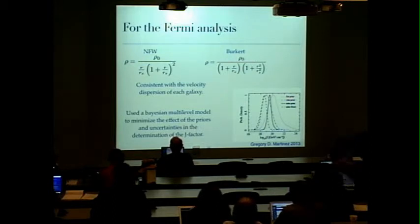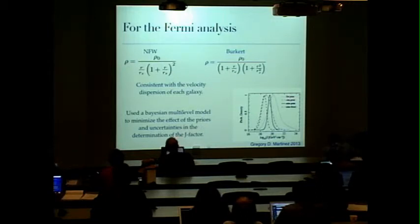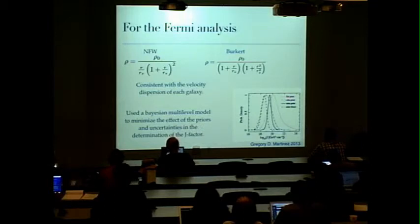The NFW and the Burkert. And the parameters of each of these profiles are consistent with the velocity dispersion of each one of the dwarf's profiles and they do a multi-likelihood evaluation model for these profiles in order to account for the uncertainties on the priors on these parameters and also for the distance to the dwarfs and every parameter that needs to have a prior. So at the end they find a well posterior distribution of astrophysical factors that does not depend very much on whether you assume an NFW or a Burkert.